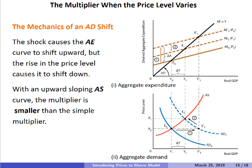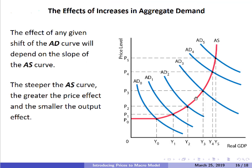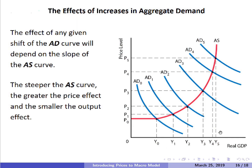Remember the slope of the AS curve gets larger and larger as we move to the right — relatively flat on the left, steeper and steeper toward the right. This means aggregate demand shocks have a smaller and smaller effect on real Y and a larger and larger effect on the price level as we shift the AD curve further right. For example, shifting from AD0 to AD1 causes a noticeable change in Y, but shifting from AD4 to AD5 causes only a small change in Y and a relatively large change in the price level.